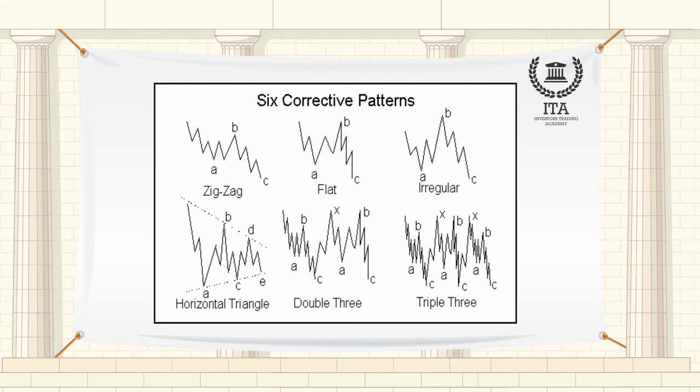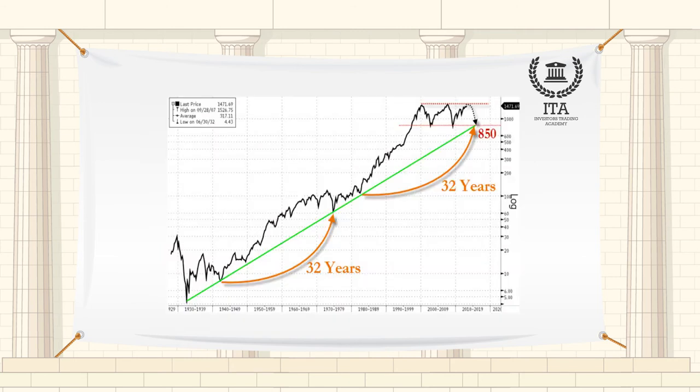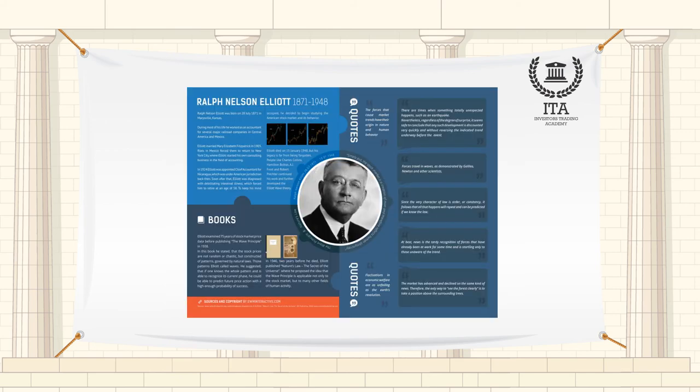He named, defined and illustrated the patterns. He then described how these structures link together to form larger versions of the same patterns, how those in turn are the building blocks for patterns of the next larger size and so on. His descriptions constitute a set of empirically derived rules and guidelines for interpreting market actions.